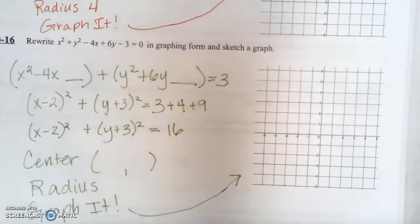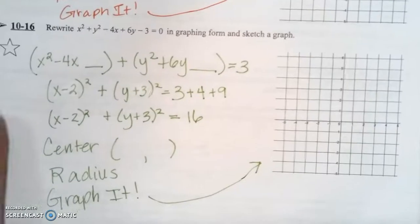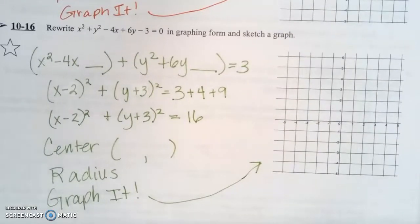For question 10-16, we're going to do the same thing. You want to take the equation x² + y² - 4x + 6y - 3 = 0, and put it in graphing form, and then you're going to sketch it.